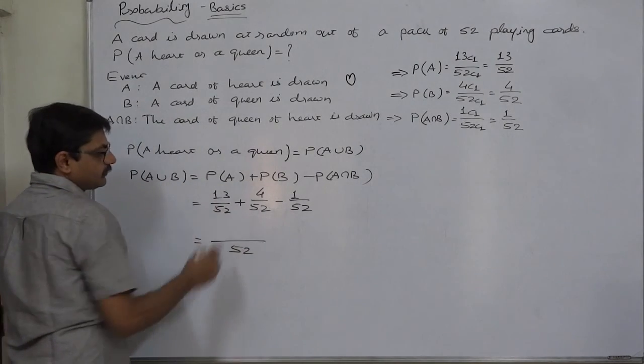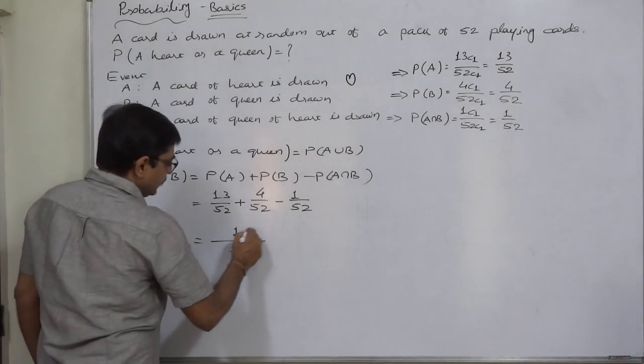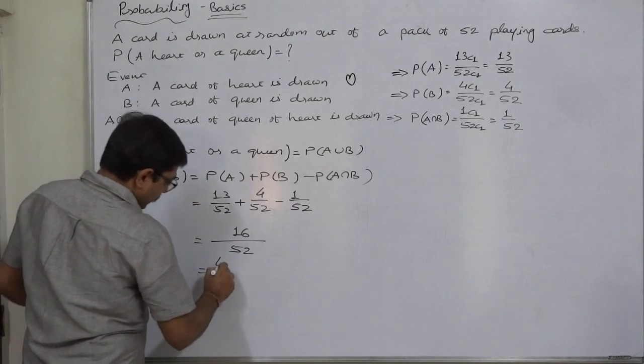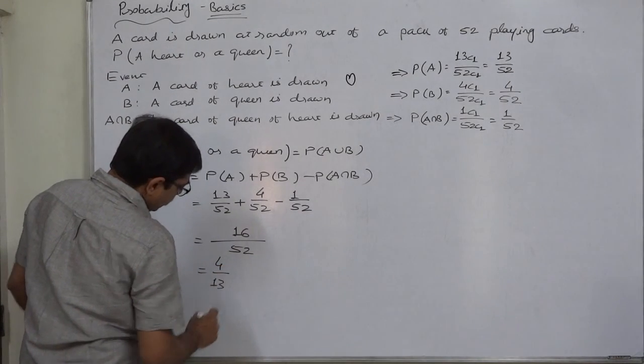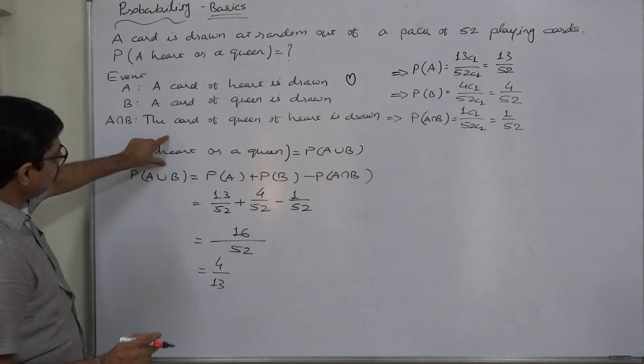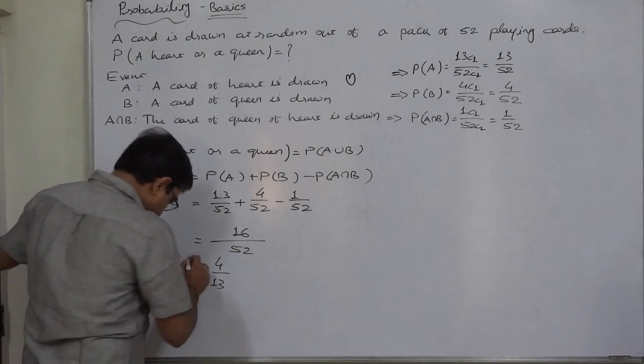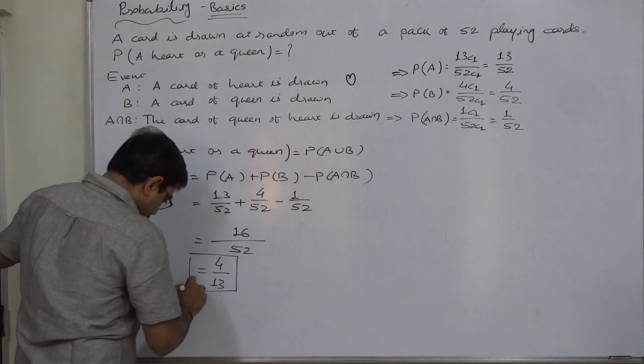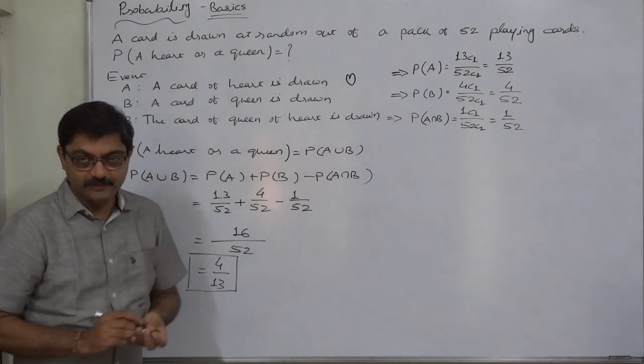So 13 plus 4, 17 minus 1, 16. The probability, or required probability, or probability of A union B, or probability of drawing a card of heart or a queen, comes to 4 by 13. Thank you very much.